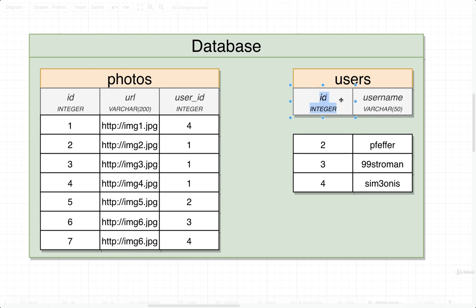Our IDs make use of the serial data type. Whenever we use that serial data type, no ID ever gets reused, even if a record with some given ID gets deleted. So when we delete the user with ID number 1, there will never be another user with ID number 1, and these photos are never going to be referencing any user again. We would have to add code to detect that we've got photos not referencing any existing user.